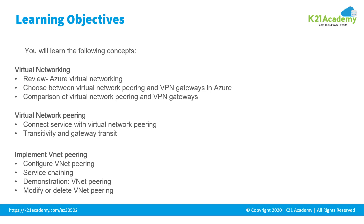When you have the networking architecture done, you just have to place the virtual machine. It will automatically go to that subnet, create a NIC or network interface card, and get connected. Virtual networks, also known as VNets, are used in Azure to provide private connectivity between Azure virtual machines and other services.